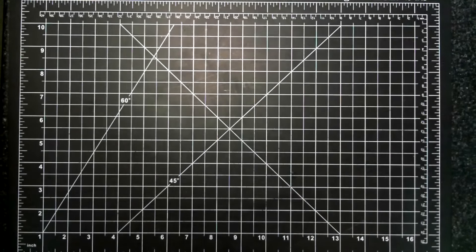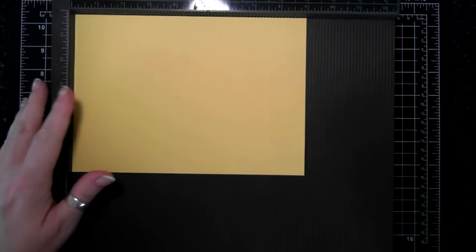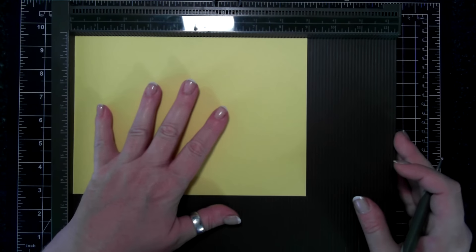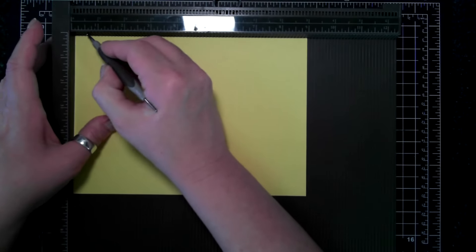I will use a current color today, so this is Daffodil Delight. We're going to need a piece of cardstock that's 9 inches by 6.5 inches. On the long side, I'm going to score at half an inch, 3.25 inches, 4.75 inches, and 7.5 inches.